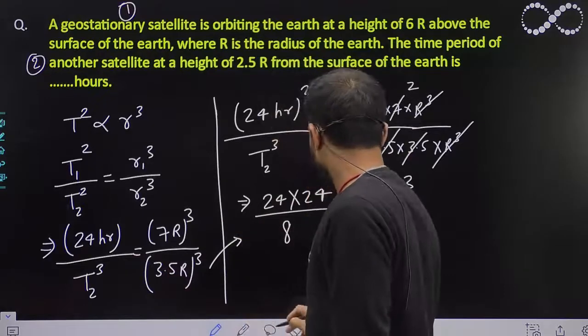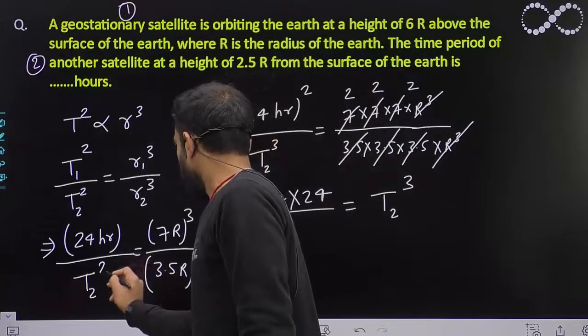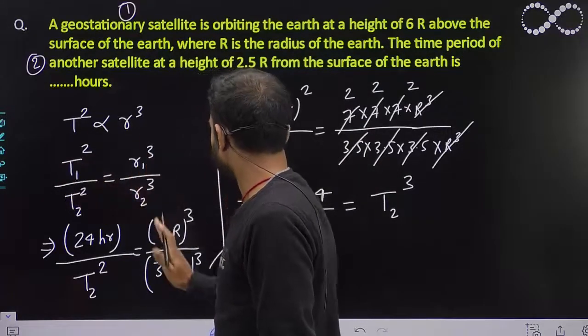See sorry, this will also be a square, my mistake. This is a square here right. The left hand side is a square and the right hand side is the cube.